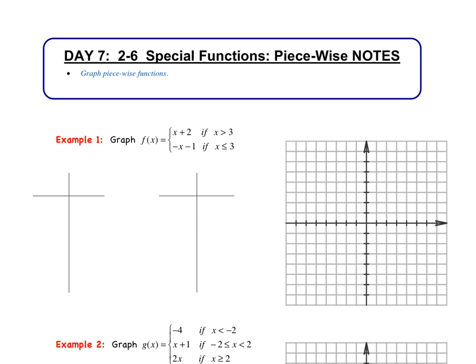So if we take a look at Example 1: graph f of x equals x plus 2 if x is greater than 3, and negative x minus 1 if x is less than or equal to 3. We've got two tables of values, and we're going to break up this function into its two pieces. The inequality x is greater than 3 goes in the first table, with the function f of x equals x plus 2.